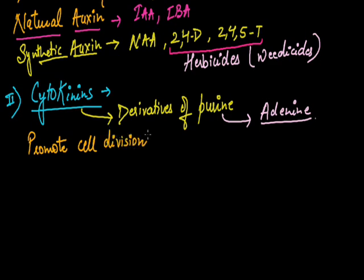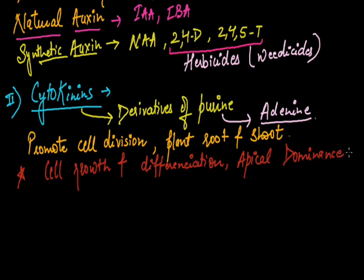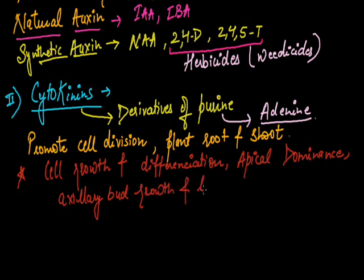With a combination of auxin, they also help in plant root and shoot development. They play important role in cell growth and differentiation into different parts of the plant. They also affect the apical dominance, axillary bud growth, and leaf senescence.